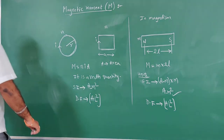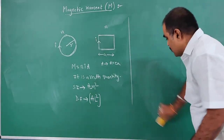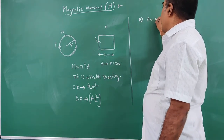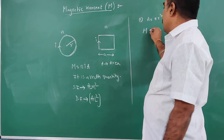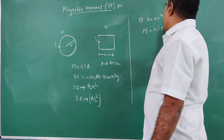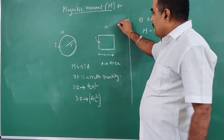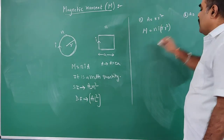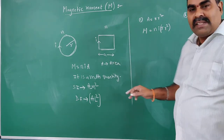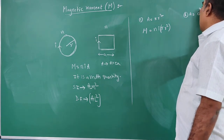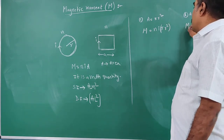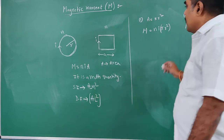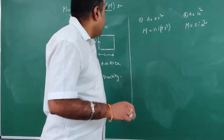For the circular coil, the area is equal to πr², so the magnetic moment M = NIπr². For the square coil, the area is equal to a², so the magnetic moment M = NIa². These are examples of magnetic moment for different coil shapes.